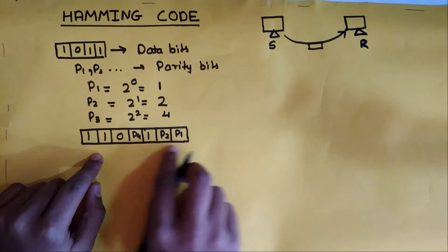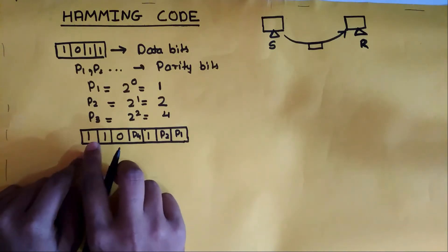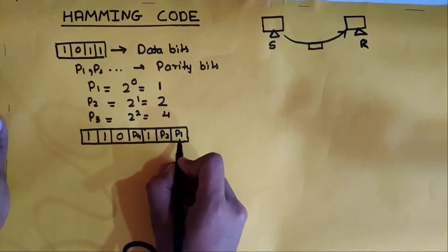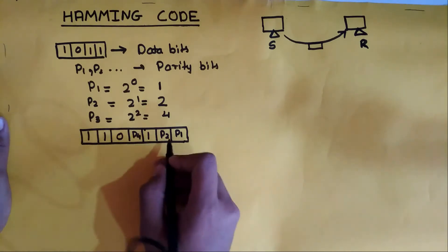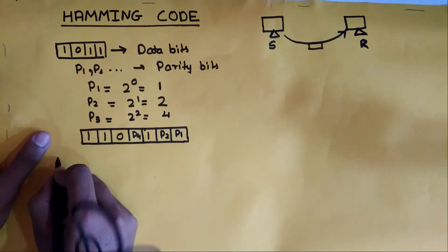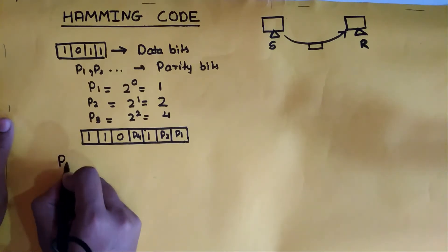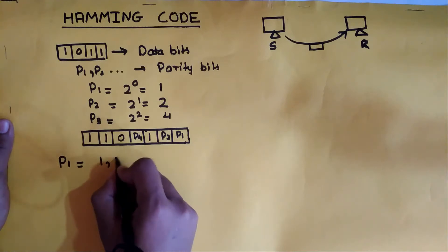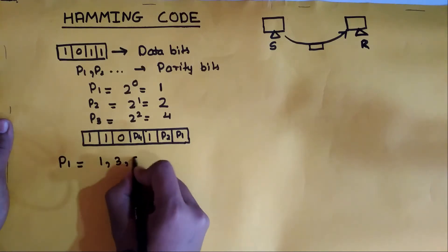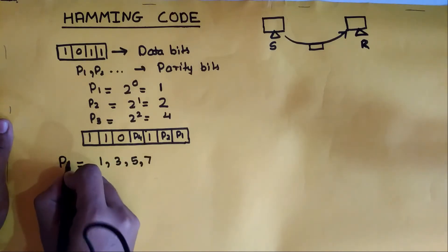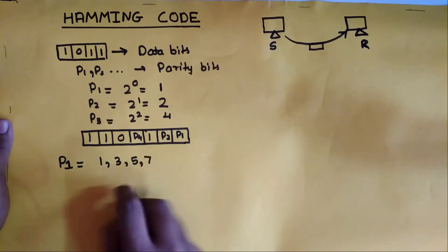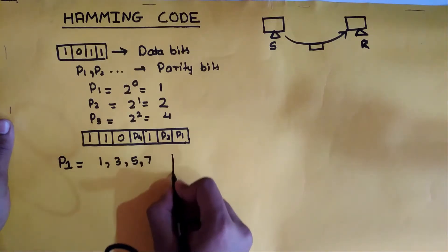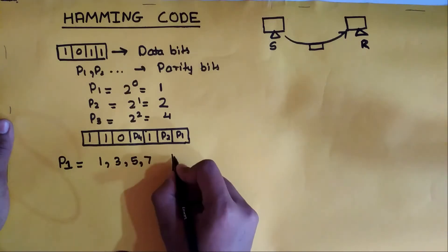Now we know the data bit values are 1011. But how do we determine the value of each parity bit? The parity bit value is determined with respect to specific positions. For P1, those positions are 1, 3, 5, and 7. We don't need to remember these — we can calculate them using a split method.